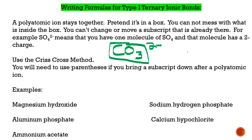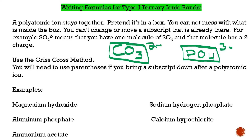Just like if you have PO4 — you cannot mess with that four. It says that in that ion you have one phosphorus and four oxygens, and the whole thing has a charge of 3−. Picture them in a box; don't mess with those subscripts. We're still going to use the crisscross method. If we bring a subscript down after a polyatomic ion, we're going to have to use parentheses, and we'll talk about what that looks like.